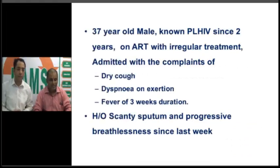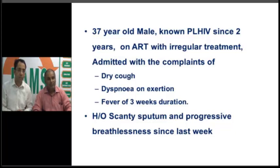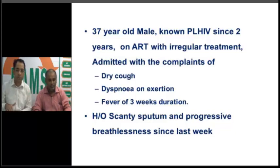A 37-year-old male, known PLHIV — patient living with HIV and AIDS — for two years, is on ART with poor adherence and no regular follow-up. We should not call them HIV positive or AIDS positive; we need to respect them and use the term PLHIV. He is admitted with dry cough, dyspnea on exertion, and fever of three weeks duration, with progressive breathlessness since the last week.